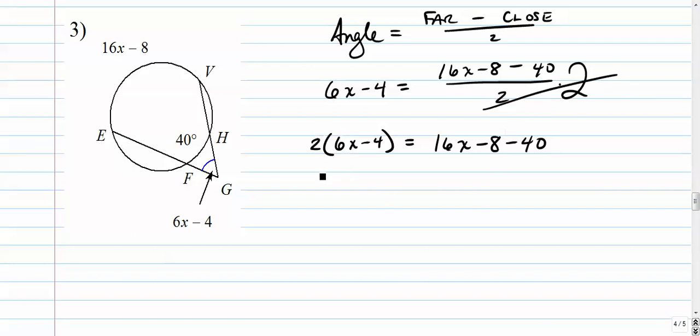Over here, we're going to distribute. We get 12x minus 8. 16x minus, we'll combine those, minus 48. So, let's see. We're going to subtract 12x from both sides. We get negative 8 equals 4x minus 48. Let's add 48 to both sides. So, we get 40 equals 4 times x. x is 10.